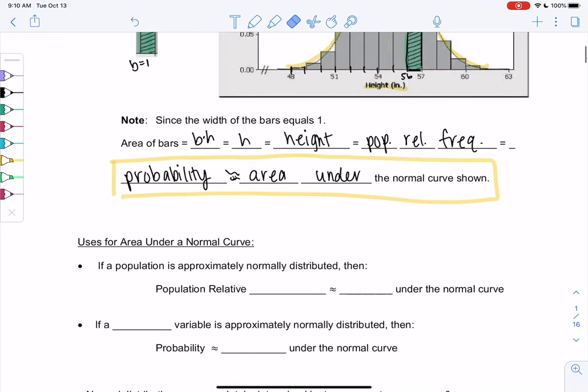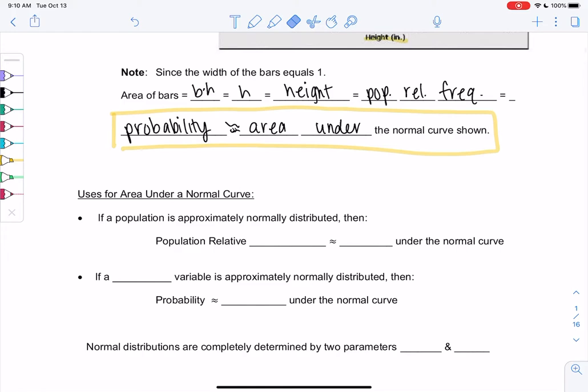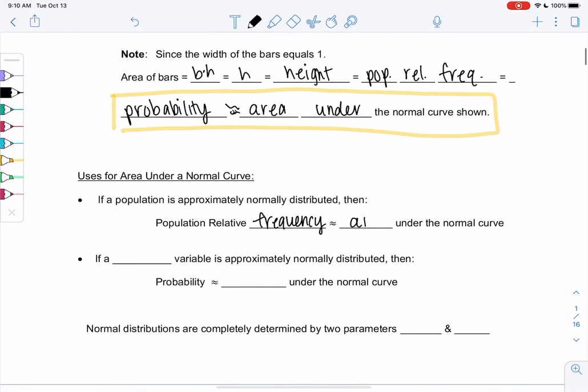So what do we use area under the normal curve for? If a population is approximately normally distributed, then population relative frequency is approximately equal to area under the normal curve. Or if we have a random variable, so that would be more of something based on chance, rather than like looking at heights, then probability is also approximately equal to area under the normal curve.